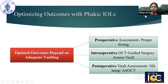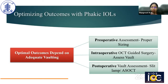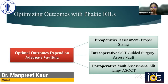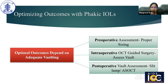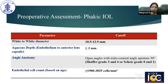Optimal outcomes depend on vaulting — it's the most important determinant of good post-operative visual and anatomical outcomes. There are three aspects: pre-operative assessment for proper sizing, intraoperative optical coherence tomography guided surgery to assess vault on the table and aid on-table decision making, and post-operative assessment of vault using slit lamp or anterior segment OCT.